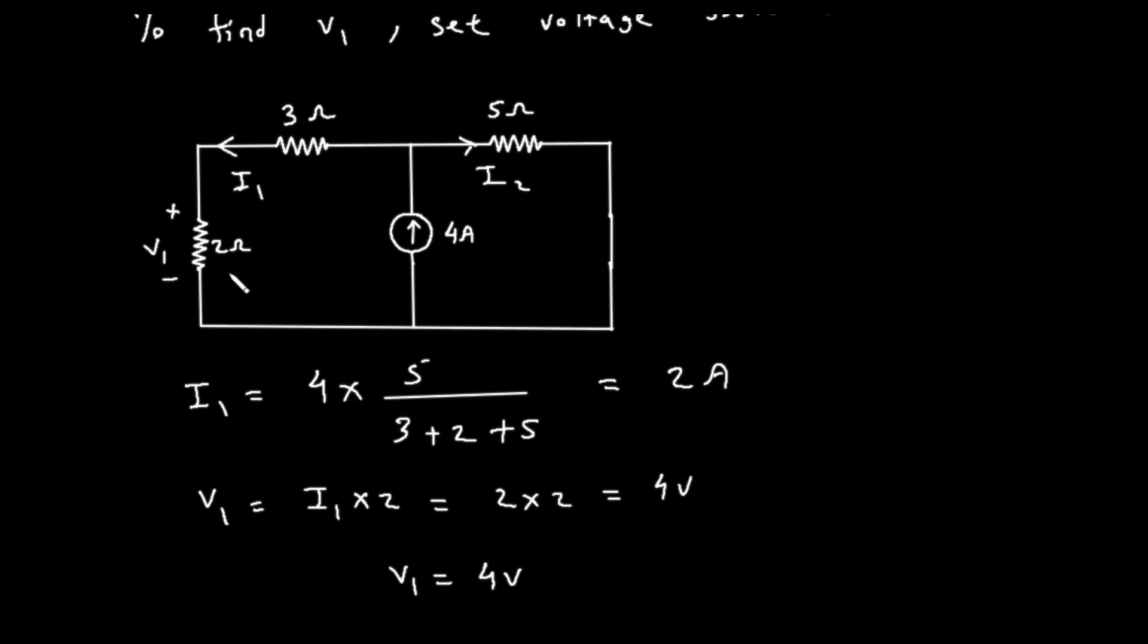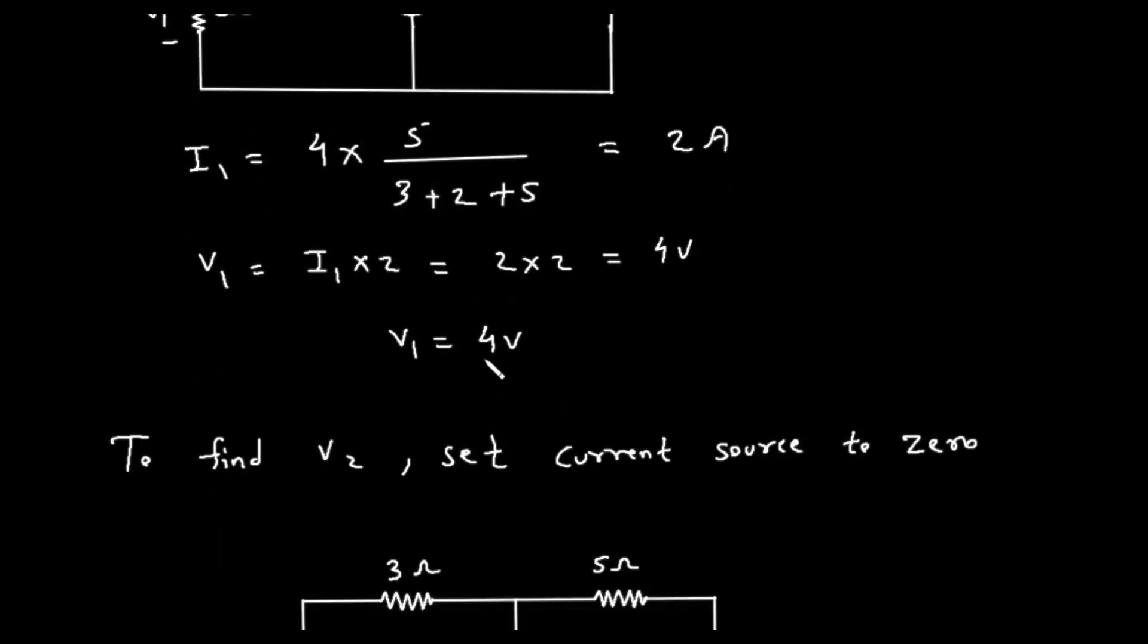Now we can find V1 using Ohm's law, which is voltage equals current times resistance. V1 is the voltage across the 2 ohm resistor. V1 equals I1 times 2. Substituting the value of I1, we get V1 equals 2 times 2, which equals 4 volts. So, V1 is 4 volts.